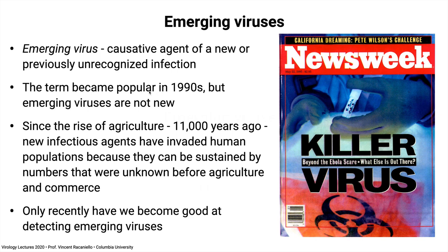Ever since the rise of agriculture, new infectious agents have invaded human populations — because populations became large enough to sustain infectious agent transmission. Before agriculture and commerce, humans were hunter-gatherers living in small communities that didn't support much infection. Infections were introduced into those small communities but didn't typically spread beyond them. This idea of an emerging virus became popularized once we got the technology to detect these emerging viruses.